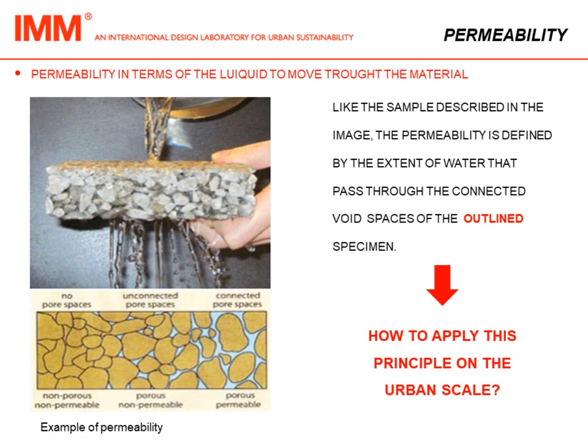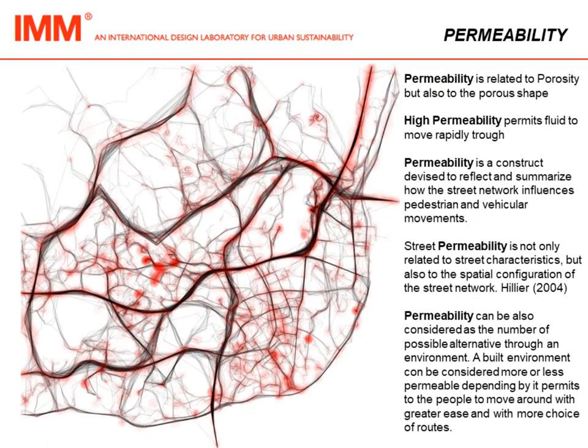On the right you can see some definitions of permeability taken from urban studies literature. Permeability is related to the speed of movement in the urban fabric, and it is affected not only by the street area — the void — but also by the network configuration. It can also be expressed as the number of alternatives through an environment, so a built environment can be considered more or less permeable depending on whether it permits people to move around with greater ease and with more choice of routes.